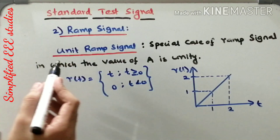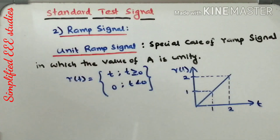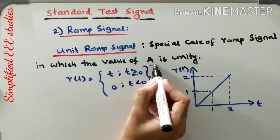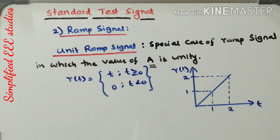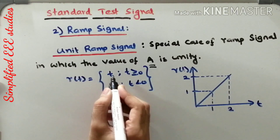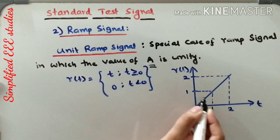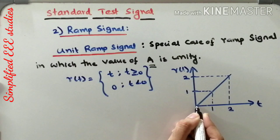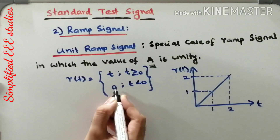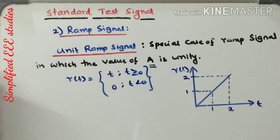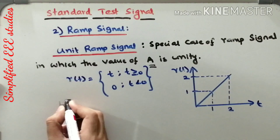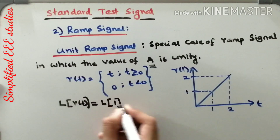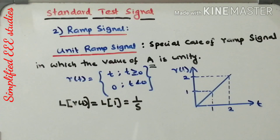In connection with ramp signal, let me discuss the unit ramp signal. It is a special case of ramp signal in which the value of A is unity. Mathematically, unit ramp signal R(t) equals t where t is greater than or equal to 0, and R(t) equals 0 for t less than 0 — it is a straight line. Taking the Laplace transform, L of r(t) equals 1 divided by s squared.